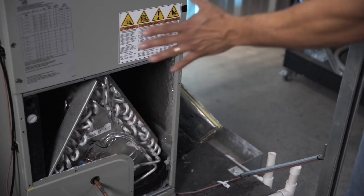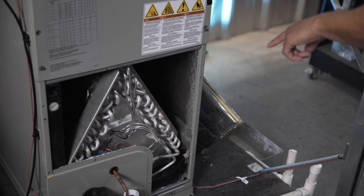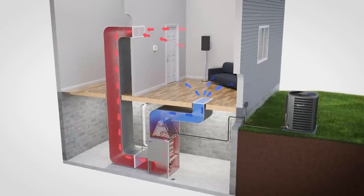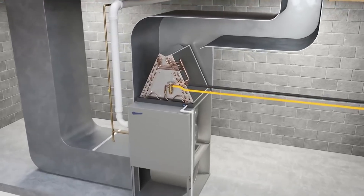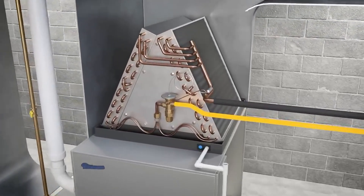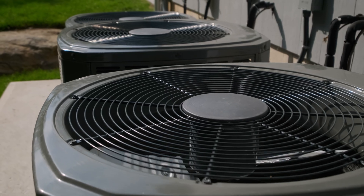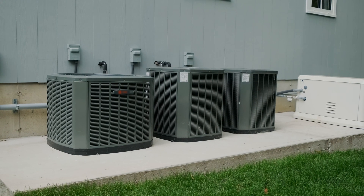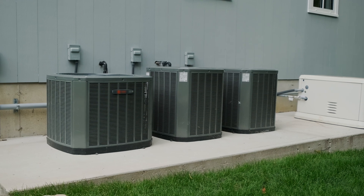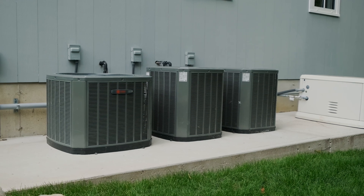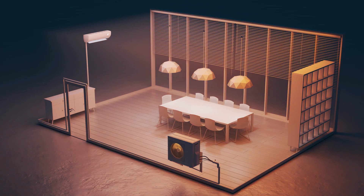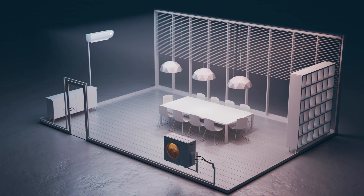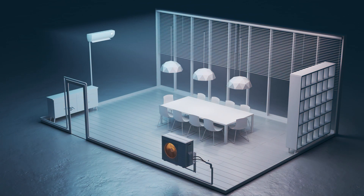The primary function of the evaporator coil in your HVAC system is to capture the heat from the indoor air of your home or business. Evaporator coils are located in the indoor unit, while the condenser coils are located in the outdoor unit of your system. They play a vital role in providing the cooling necessary to generate the cold air that keeps your home or business comfortable.